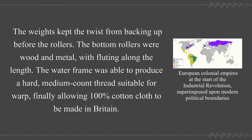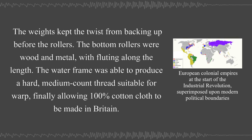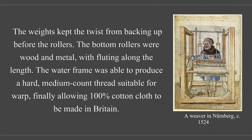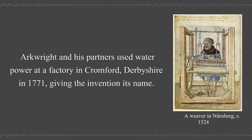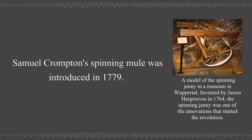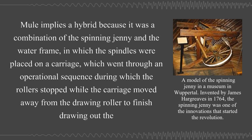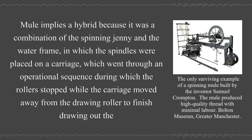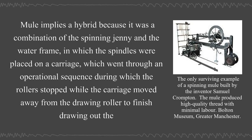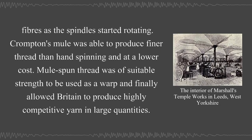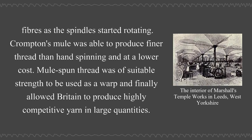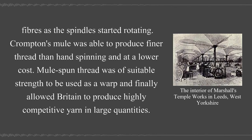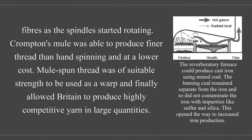Arkwright and his partners used water power at a factory in Cromford, Derbyshire, in 1771, giving the invention its name. Samuel Crompton's spinning mule was introduced in 1779—a hybrid combining the spinning jenny and the water frame, in which the spindles were placed on a carriage that went through an operational sequence during which the roller stopped while the carriage moved away from the drawing roller to finish drawing out the fibers as the spindle started rotating. Crompton's mule was able to produce finer thread than hand spinning at a lower cost, and mule-spun thread was of suitable strength to be used as warp, finally allowing Britain to produce highly competitive yarn in large quantities.